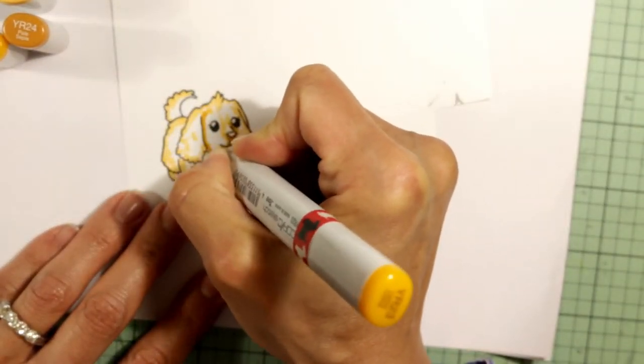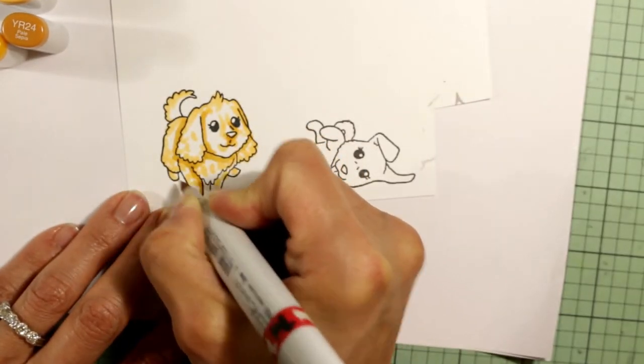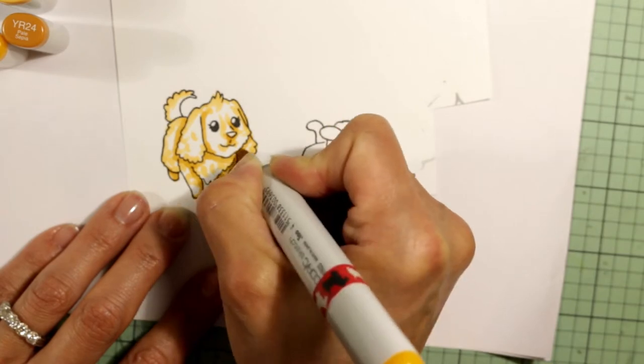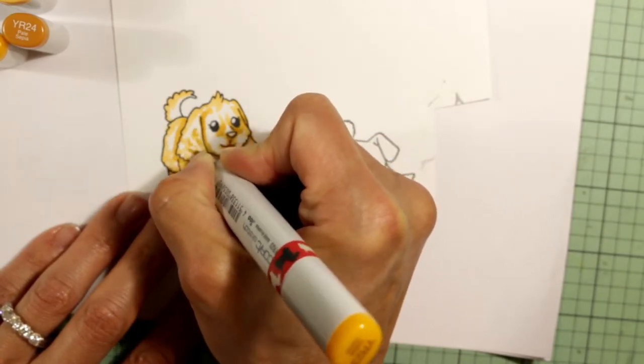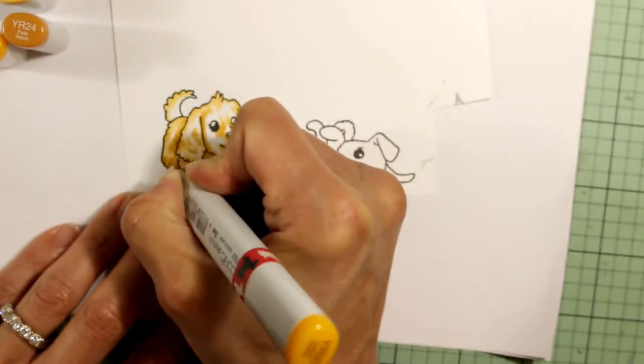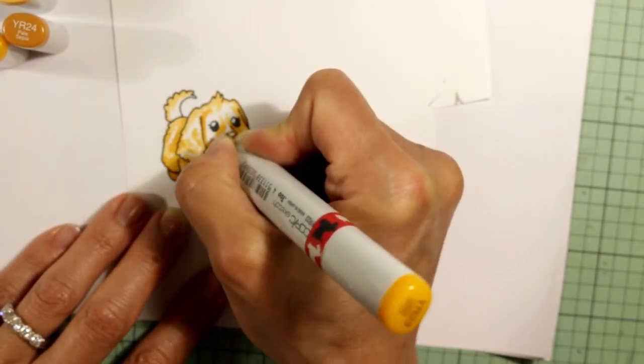Then I'm marking in where the darker shadowed areas are: underneath the chin, behind the ears, under where the chest meets the legs, where the head would cast a shadow, underneath where the ears and the haunches would cast a shadow underneath.